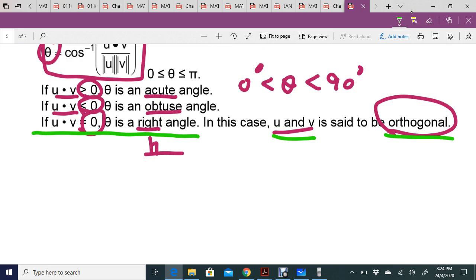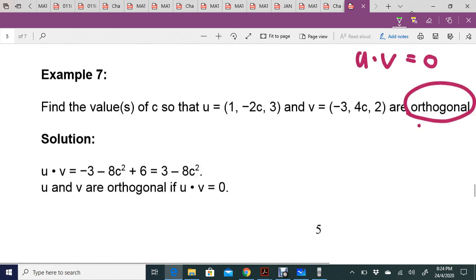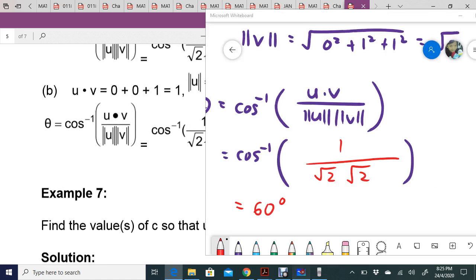If u dot v equals zero, u and v are said to be orthogonal. Okay, so let us continue. I'll just demo to you.